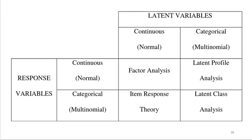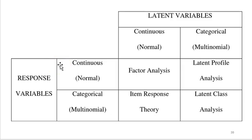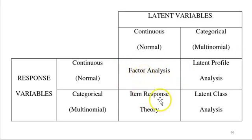Slide 20 represents a glimpse into the world of latent variables. In our situation, we have continuous observed variables — also called response variables, items, or manifest variables. You ask someone to give you a score, and that becomes a data value for that variable. We're talking about continuous latent variables here, but you might also have categorical response variables and categorical latent variables. In the case of factor analysis, there are other related techniques such as item response theory, latent profile analysis, and latent class analysis. You should not ignore the measurement level of your variables — you will greatly enhance the quality of your work by using proper modeling techniques.